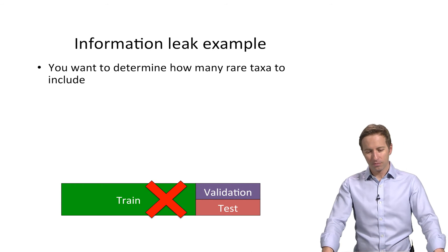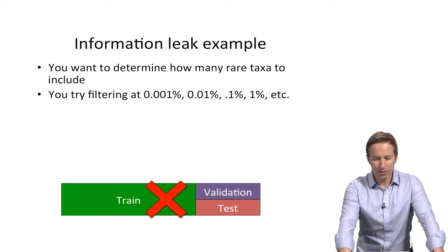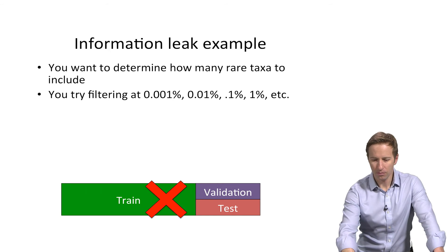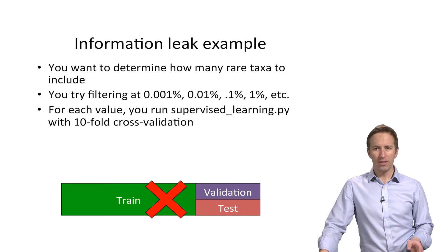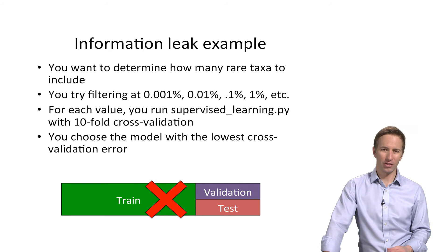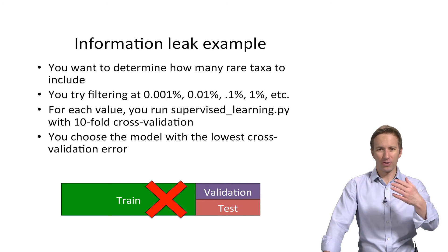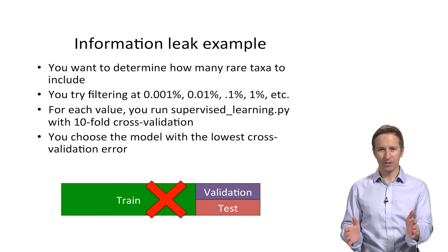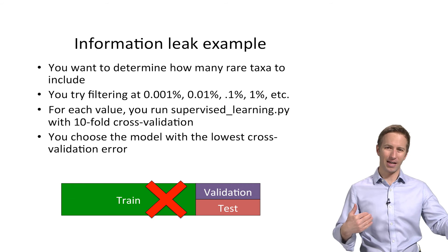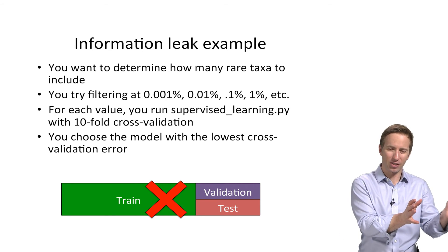So here's an information leak example. Let's say you want to determine how many rare taxa to include in your model. And you try filtering your model at 0.001%, 0.01%, 0.1%, and 1%. For each value, you run the supervised learning script in Chime with tenfold cross validation. And then you choose the model with the lowest cross validation error. So why is this not okay? Well, you here were part of the training or tuning process because you were manually trying lots of different values. And you picked the value that made it perform best on holdout data. So you're not actually assessing how well the model performs on holdout data, because it's biased toward that particular set of holdout data that you were using.